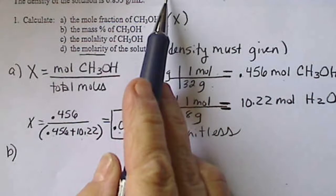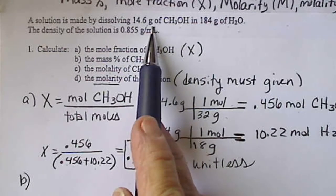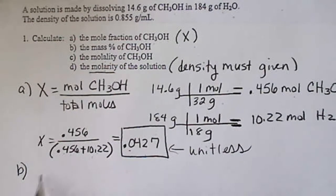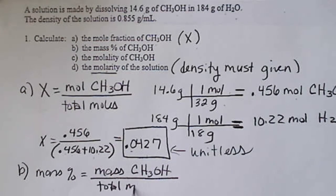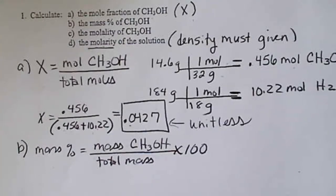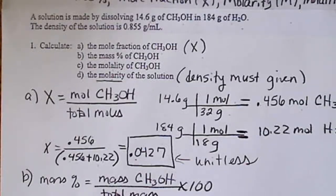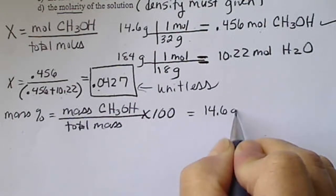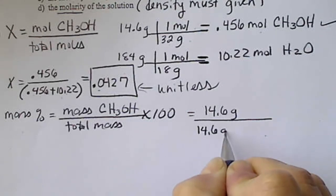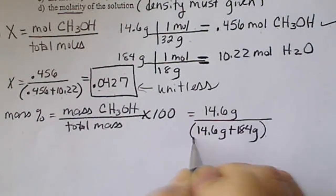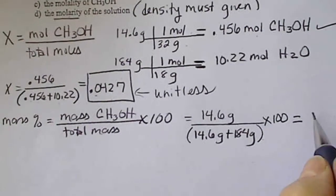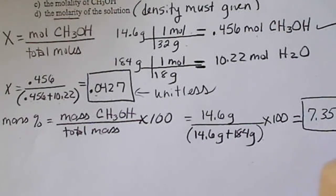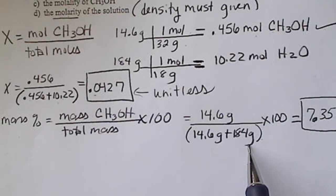For mass percent, everything we need is already given. Mass percent equals the mass of the solute divided by the total mass, multiplied by 100. So this is 14.6 grams divided by (14.6 grams + 184 grams), being careful with calculator entry, times 100. That gives us 7.35%. Any percent is the part over the whole times 100.